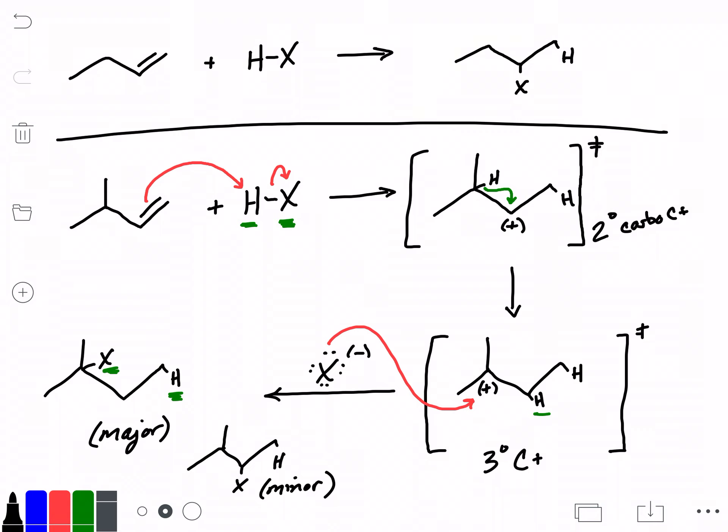For now, we can sort of say the top mechanism is what happens when we don't have a rearrangement. We did go through our carbocation intermediate, so anytime we see a carbocation intermediate in a reaction mechanism, we want to consider the possibility of rearrangement.